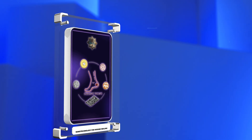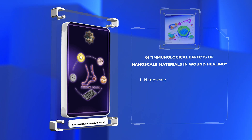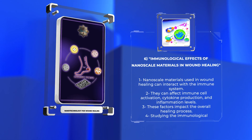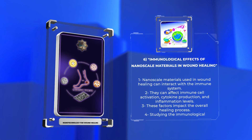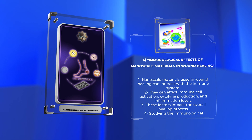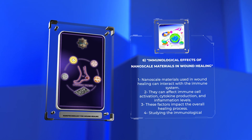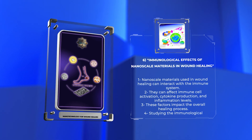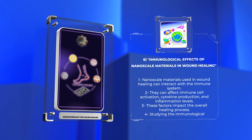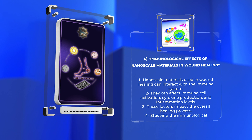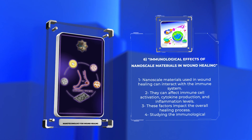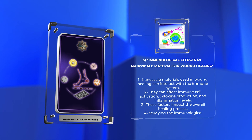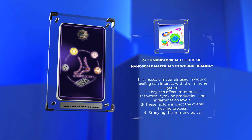When nanoscale materials are used in wound healing, they can interact with the immune system in various ways. These materials can affect the activation of immune cells, the production of molecules called cytokines that regulate immune responses, and the level of inflammation present in the wound. All of these factors can have an impact on the overall healing process. Therefore, it is important to study and understand the immunological effects of nanoscale materials in order to develop wound healing interventions that are both safe and effective.